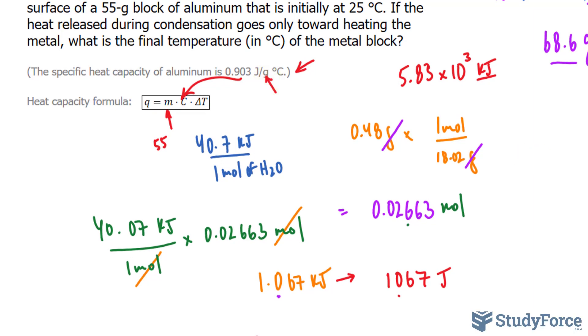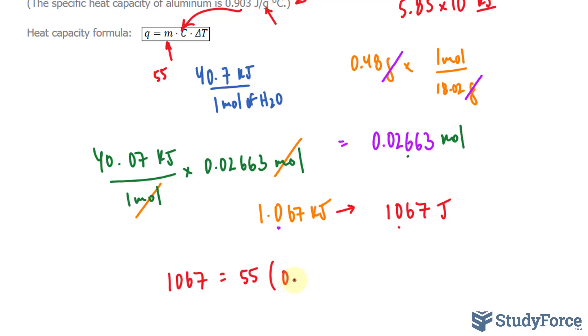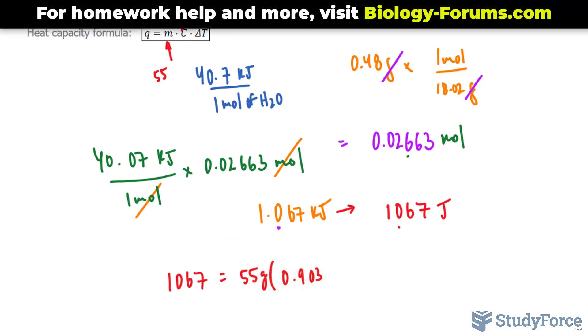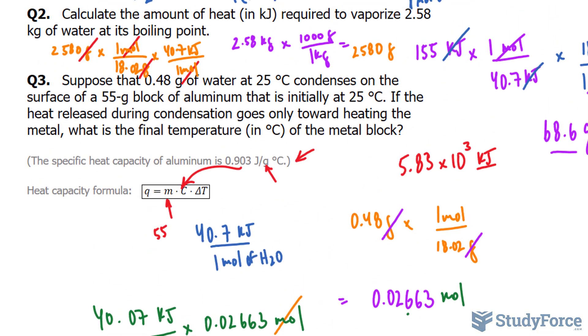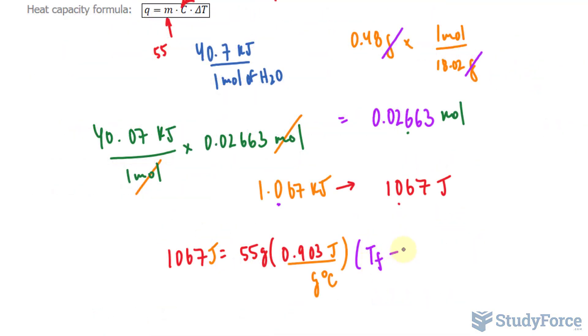Notice that they match, so we don't have to change grams into anything. 0.903 joules per gram Celsius. Notice that the units all cancel out, leaving Celsius. And this is being multiplied to delta T. Now we don't know the final temperature, but we do know the initial. And delta T represents final minus initial: T final minus the initial of 25 degrees. We're now solving an algebraic problem.